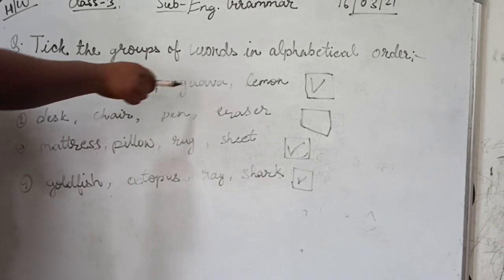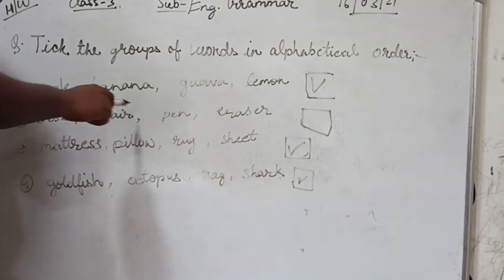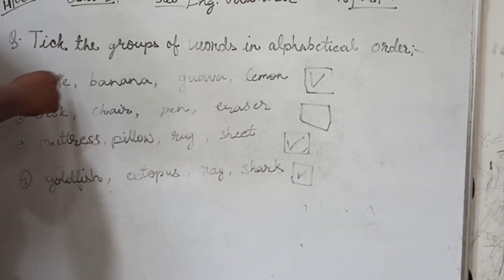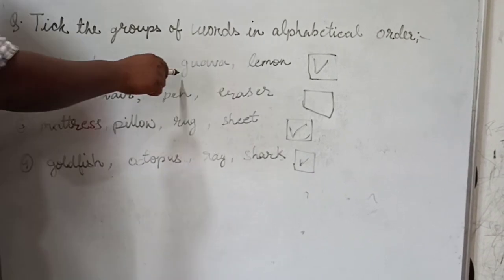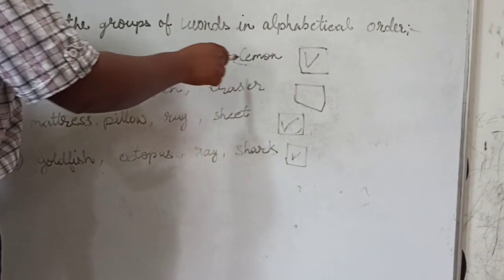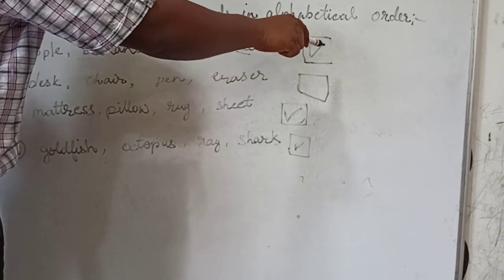Number 1: Apple, Banana, Guava, Lemon. Are these words in alphabetical order? Yes, because A - Apple, after that B - Banana, G - Guava, L - Lemon. So it is in alphabetical order. We will tick.